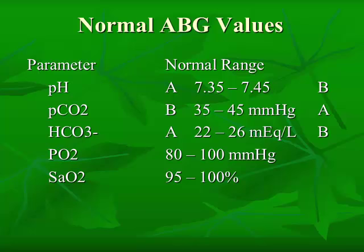Let's look at the normal ABG values — these are something you need to know. A pH of 7.35 to 7.45: there is an A before the 7.35, indicating the acid end, and a B after the 7.45, indicating the base range. So if you go below 7.35, the patient is becoming more acidic; if you go above 7.45, they're becoming more basic. The PCO2 range is 35 at the base end to 45 at the acid end. The bicarb is 22 at the acid end to 26 at the base end. Your PO2 is 80 to 100, and your SAO2 is 95 to 100%.